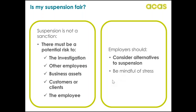Employers should be mindful of the stress suspension causes to employees and keep those who are suspended up to date. Updates could include progress of the investigation, how long the suspension is likely to last and any delays or changes. If an employee does not think their suspension is justified they should raise concerns with the employer. Remember, if an employee does not believe a procedure has been handled fairly they can raise a formal grievance, appeal a disciplinary sanction, or make a claim to an employment tribunal in some cases.